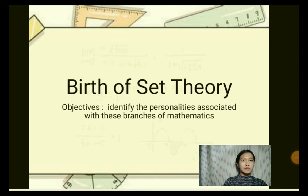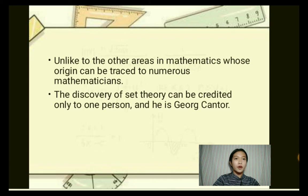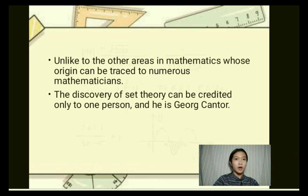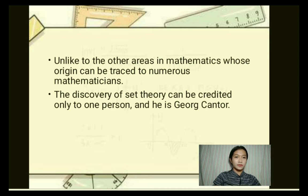The objective is to identify the personalities associated with these branches of mathematics. The history of set theory is rather different from the history of most other areas of mathematics. For most areas, a long process can eventually be traced in which ideas evolve until an ultimate flash of inspiration, often by a number of mathematicians almost simultaneously, produces a discovery of major importance. The discovery of set theory can be credited only to one person, and he is George Cantor. Before we take up the main story of Cantor's development of the theory, we first examine some early contributions.